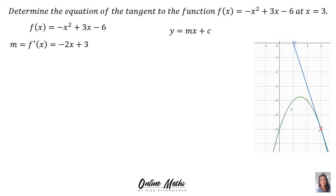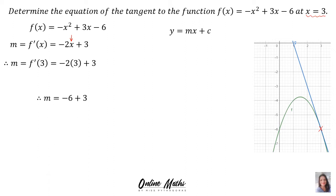This is happening at x = 3. So now we can find the true gradient there by substituting x = 3 into the derivative: -2 × 3 + 3. That gives -6 + 3, so the gradient m is -3.